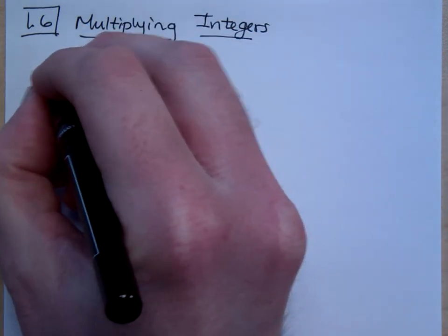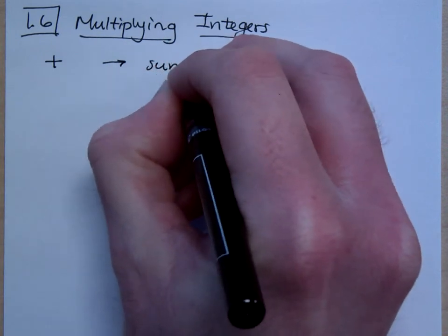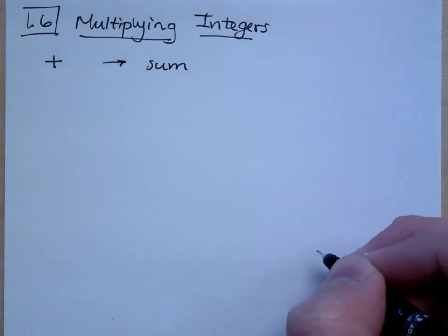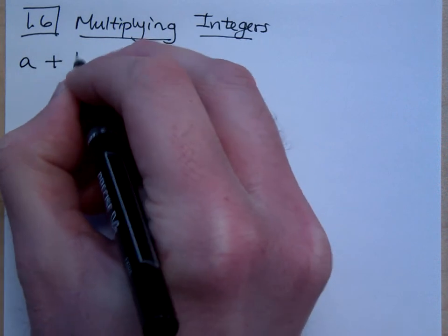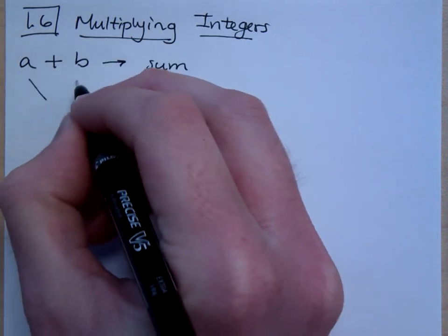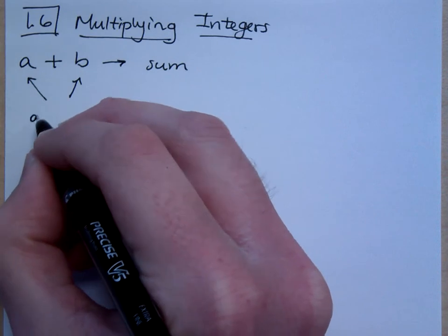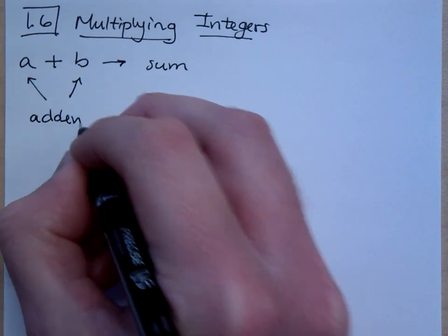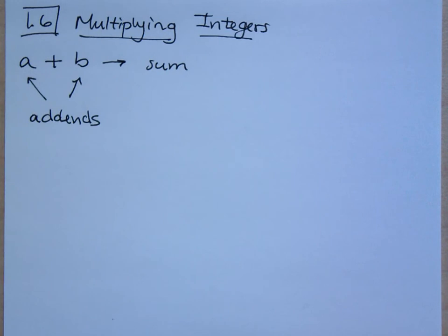Remember how, when we had addition, that meant that we were using the word sum, right? And when I had the two pieces of this, what were the two pieces of a sum called? It's a good thing that I remember — these guys are called add-ins. That's what the two pieces of a sum is called.